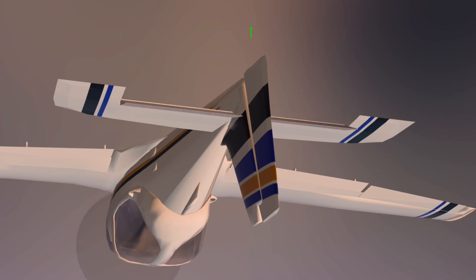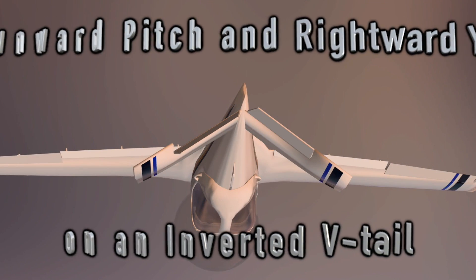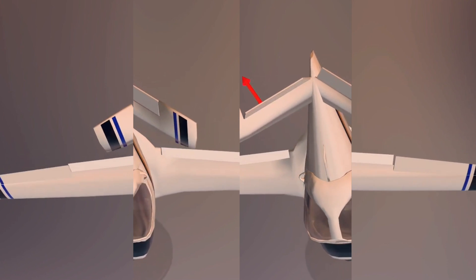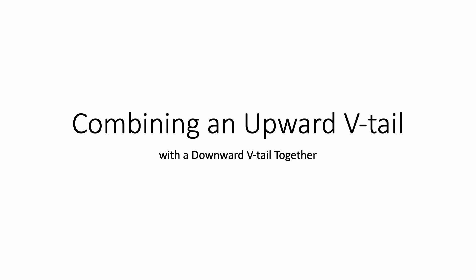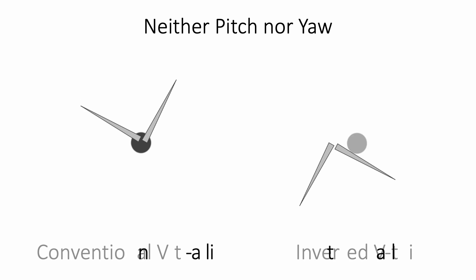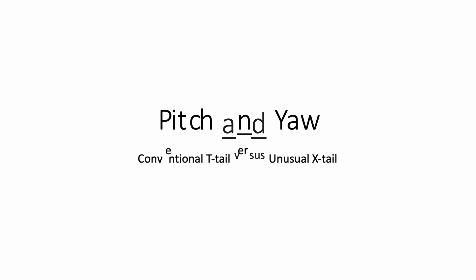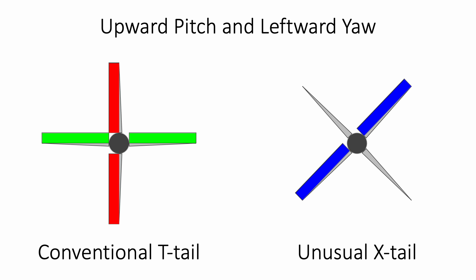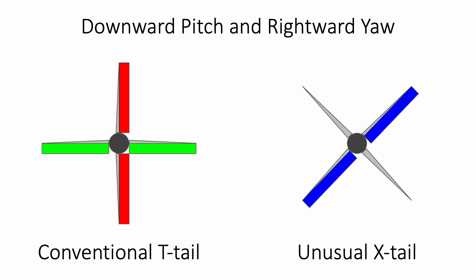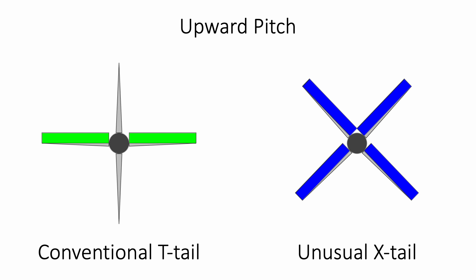When an airplane pitches down and yaws to the right, the right-facing ruddervator moves downward. There is also an X-tail configuration, where a conventional V-tail and an inverted V-tail are mounted above and below the fuselage respectively. When an X-shaped tail performs a simultaneous yaw and pitch, either pair of ruddervators along a diagonal axis will move. But when either a yaw or a pitch is performed alone, all four ruddervators will move towards a particular direction.